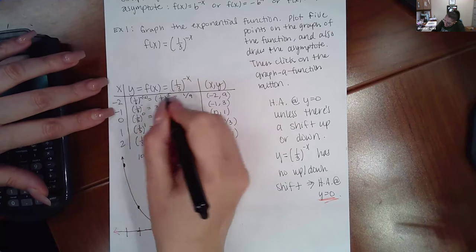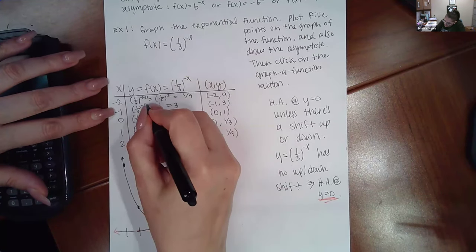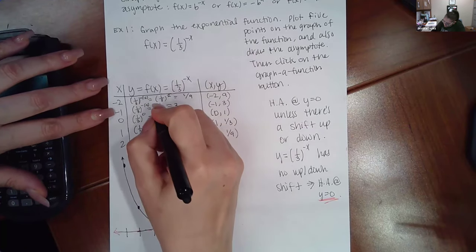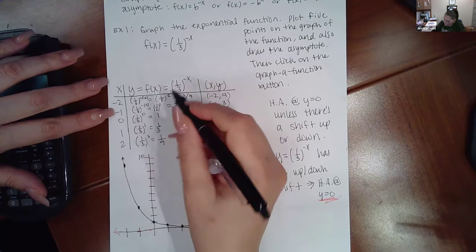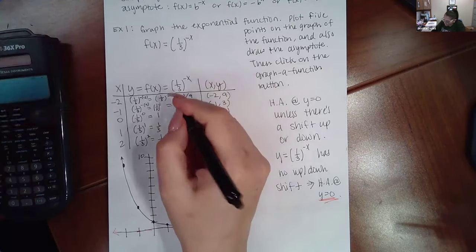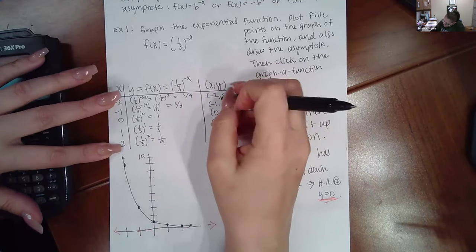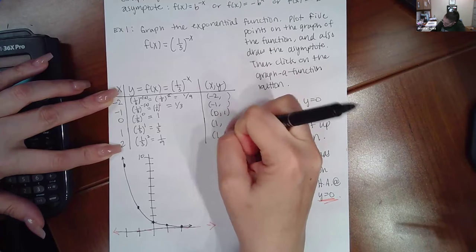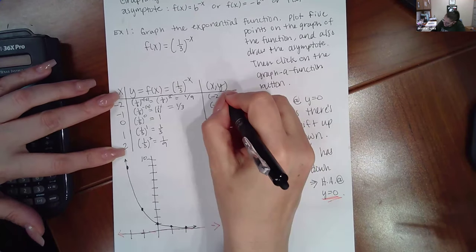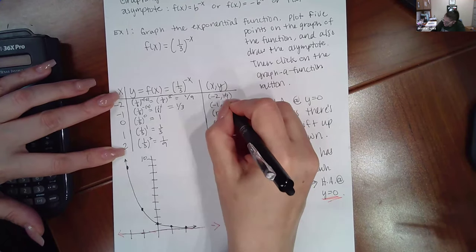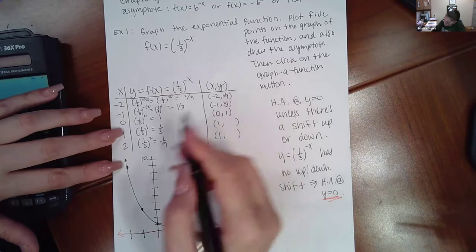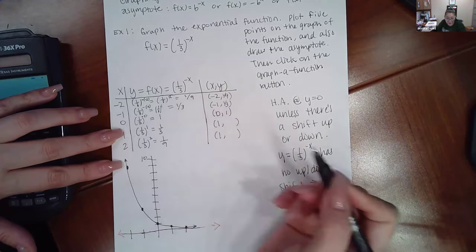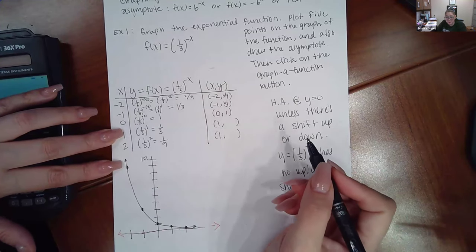Similarly, when I plug in negative one, we have a negative there times the negative one, which means I'm going to end up with one third to the positive one power, which is going to end up being one third. So these y values are a little bit backwards. We'll keep working on it. So then we get one ninth here, we get one third there. It doesn't matter whether there's a negative here or not, it's still to the zero power, and one third to the zero power is one.